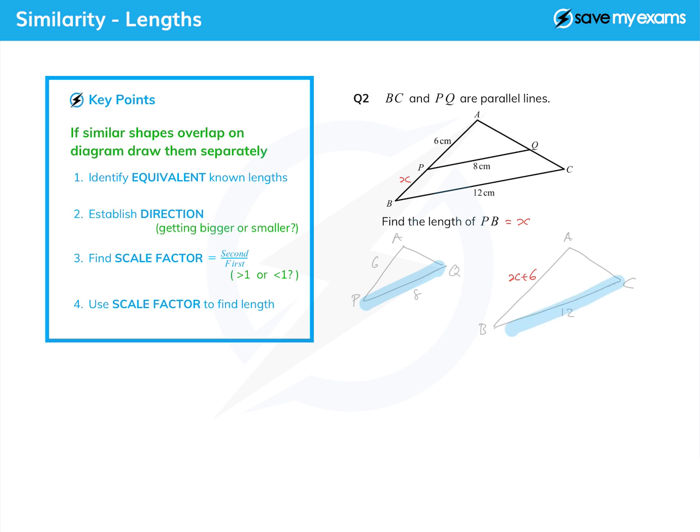So identify the known lengths - the 8 and the 12 are the equivalent known lengths, the equivalent sides on the triangle. We need to decide which way we're going. The X which is the thing we're trying to find is on the bigger triangle, so let's go this way and find our scale factor. That's the second number over the first number of the equivalent length, so that's 12 over 8. Let's check that that is bigger than 1, and that's good because we are getting bigger. Now we can say, although we're not going straight for PB, we are going for AB. AB is AP times 12 over 8. If we substitute in X plus 6 for AB and 6 for AP times 12 over 8, 6 times 12 over 8 happens to be 9.